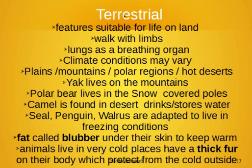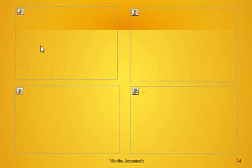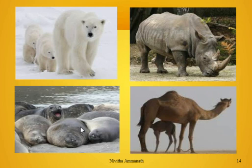So terrestrial animals have features suitable for life on land, whether it is plains, mountains, polar regions, or desert. They walk with limbs and breathe through lungs. You can see the polar bear with fur, blubber-filled seals, and the thick skin of a hippopotamus or elephant that helps withstand heat. The camel stores water because water is scarce in the desert.